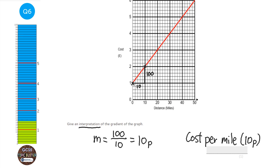The gradient is the cost per mile — 10p. It could be that just writing 'cost per mile' would get the mark, but if you write the gradient value as well you'll definitely get it. Sometimes the question asks for the gradient and then asks you to interpret it.